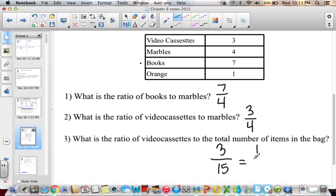3 divided by 3 is 1. 15 divided by 3 is 5. So then if I simplify it, I can also say there's 1 video cassette for every 5 items in the bag.